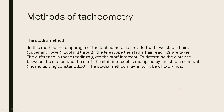Methods of tachymetry. The first method is the stadia method. In this method, the diaphragm of the tachymeter is provided with two stadia hairs — upper and lower. Looking through the telescope, the stadia hair readings are taken. The staff intercept is multiplied by the stadia constant, which is the multiplying constant 100, to determine the distance between the station and the staff.